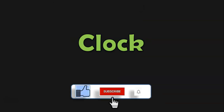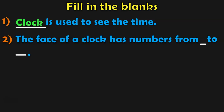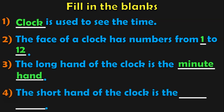The next topic we are going to see is clock. Before that, to do many more activities on calendar facts, you may visit my calendar facts video, linked below in the description box. Fill in the blanks: blank is used to see the time — clock. The face of a clock has numbers from 1 to 12. The long hand of the clock is the minute hand. The short hand of the clock is the hour hand.